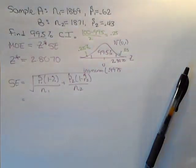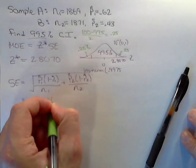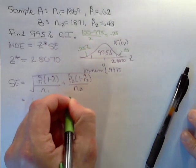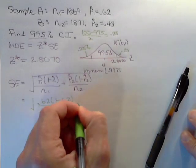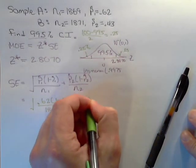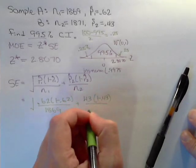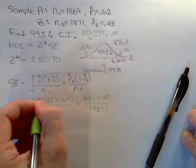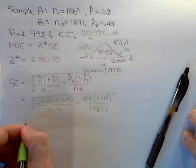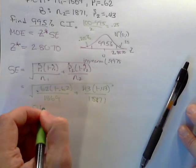Substituting the values for this situation, we have the square root of 0.62 times 1 minus 0.62 divided by 1,869, plus 0.43 times 1 minus 0.43 divided by the second sample size, 1,871. This gives a standard error of 0.0160.